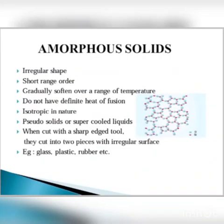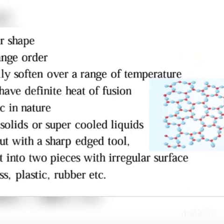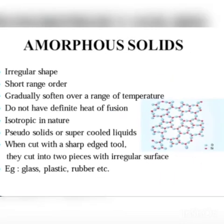Amorphous solids are non-crystalline solids in which the constituent particles are not organized in a definite pattern. The particles are arranged closely packed but in an irregular pattern. Amorphous solids do not have a definite lattice pattern — they have an irregular shape.